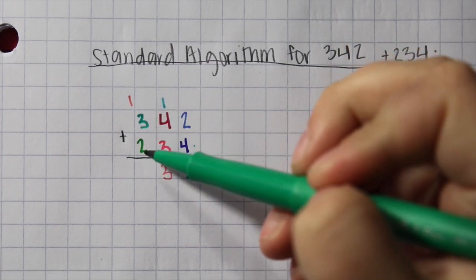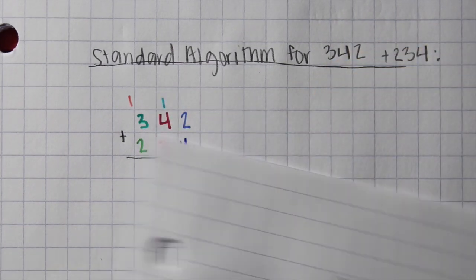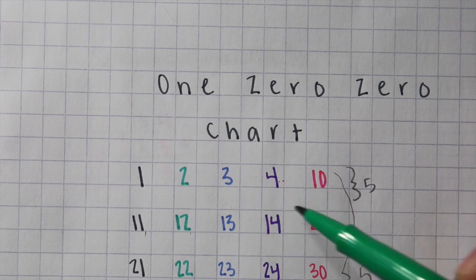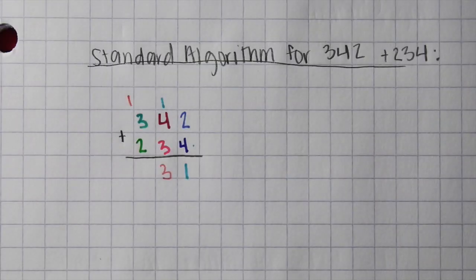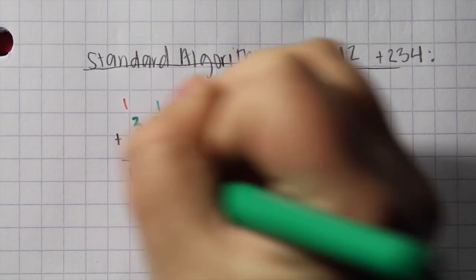And finally, we'll do 3 plus 2 plus 1. So once again, the 100 chart, 3 plus 2 is 10, plus 1 is 11. So we'll go ahead and write that value down there.